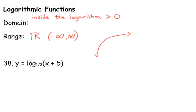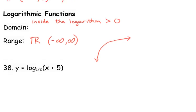So, for number 38, we have log base 1 half of x plus 5. So, log base 1 half of x plus 5, we take what is inside of the logarithm, and that has to be greater than 0 for our domain. So, this is saying that x is greater than negative 5, and in interval notation, that would be from negative 5 to infinity, and our range is all real numbers.